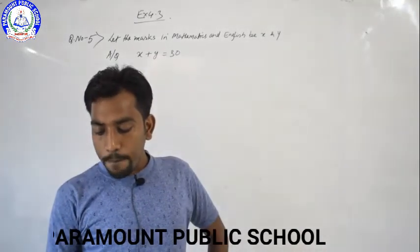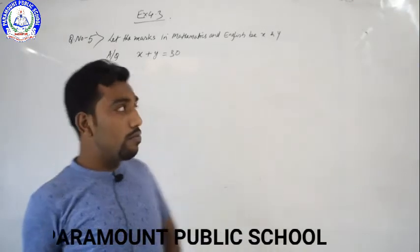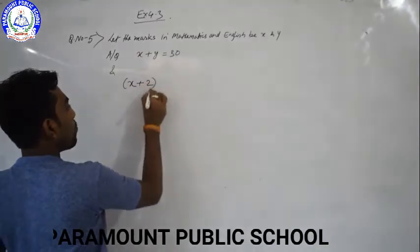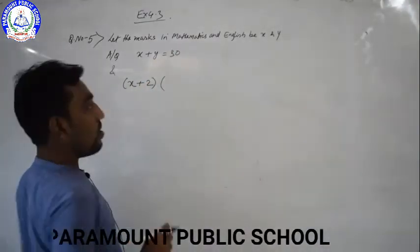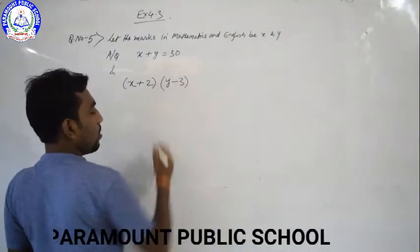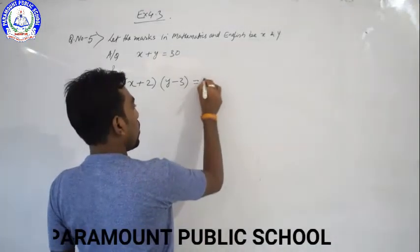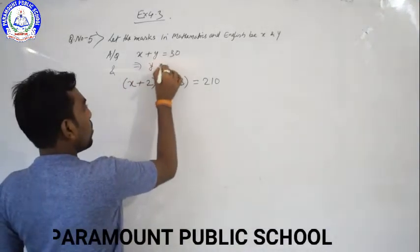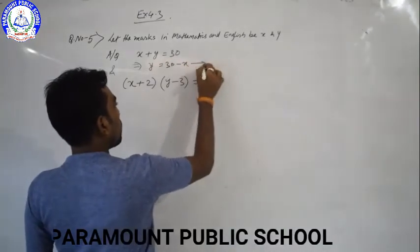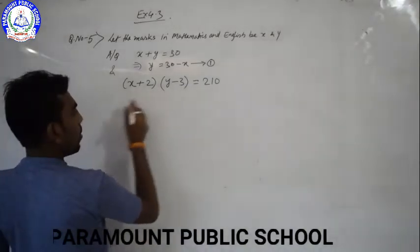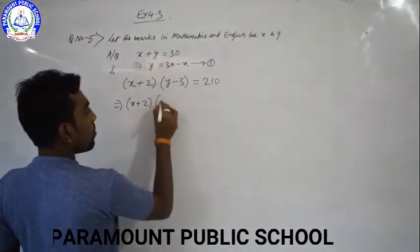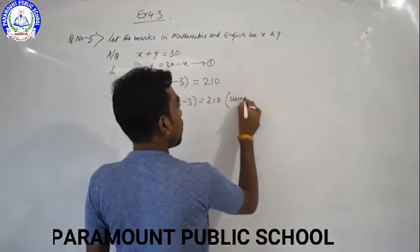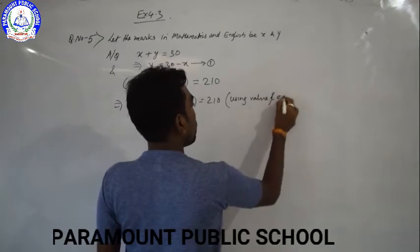The second condition: had she got two marks more in mathematics, that means X plus 2, and three marks less in English, meaning Y minus 3, their product is 210. From equation 1, Y equals 30 minus X. Substituting the value of Y, we get (X plus 2)(30 minus X minus 3) equals 210.